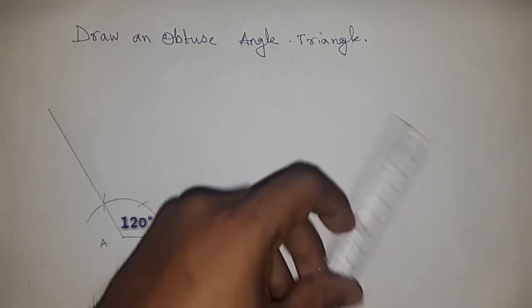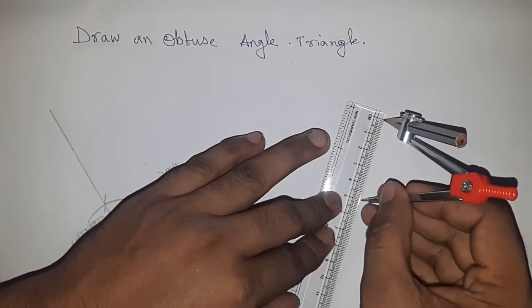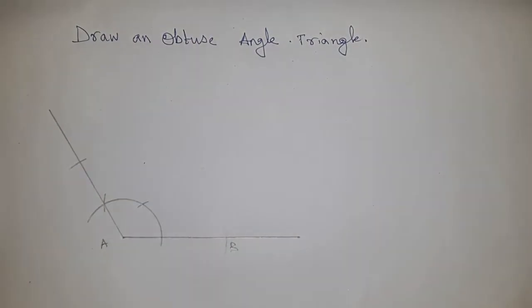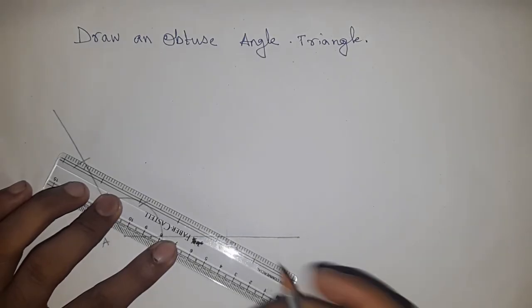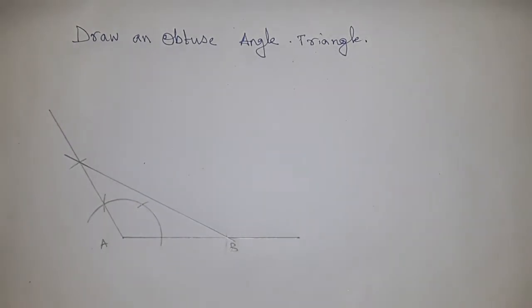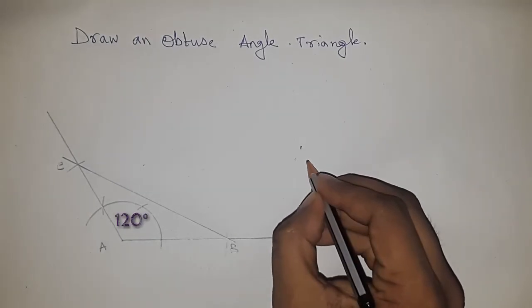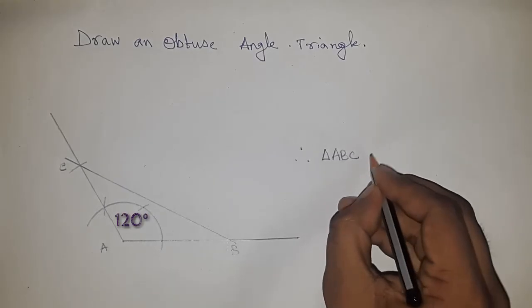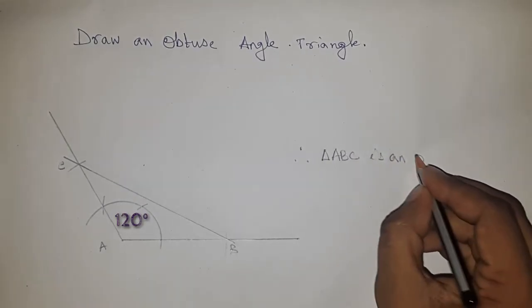Now, take a measure of five centimeters by scale and cut the line. Next, join this point. This is point C. Therefore, triangle ABC is an obtuse angle triangle.